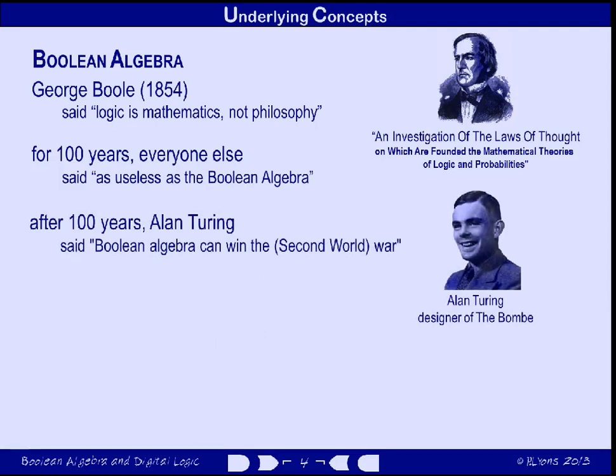Well, after they'd been saying that for nearly a hundred years — about ninety actually — Alan Turing came along. At the time, Britain was busy fighting the Second World War, and Alan Turing said: Boolean algebra can win the war. So, why the massive turnaround? Because Germany — in particular the German Navy — was using a coding device that had been invented in the 1920s called the Enigma machine.